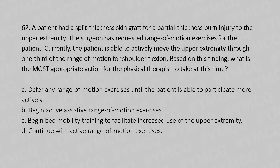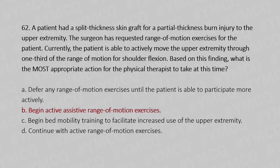Option A: defer any range of motion exercise until the patient is able to participate more actively. Option B: begin active assisted range of motion exercises. Option C: begin bed mobility training to facilitate increased use of upper extremity. Option D: continue with active range of motion exercises. The answer is Option B — begin active assistive range of motion exercises.